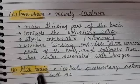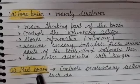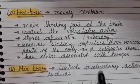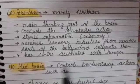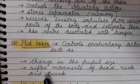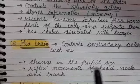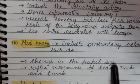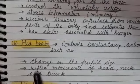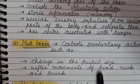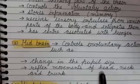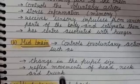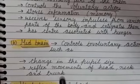Next is the Midbrain. It controls involuntary actions such as change in the size of the pupil of the eye, and reflex movement of the head, neck, and trunk.